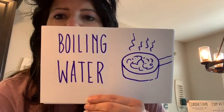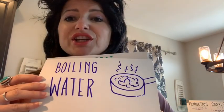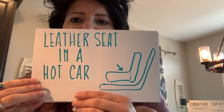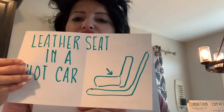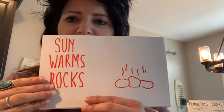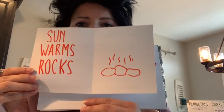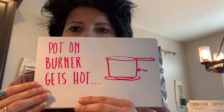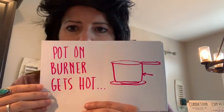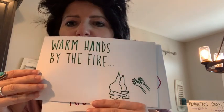First question: boiling water. If you said convection, you're right. Next: a leather seat in a hot car. If you said conduction, you are correct. How about sun warming rocks? Radiation. How about a pot on a burner and the pot is getting hot? That's conduction. How about warming hands by the fire? Also radiation.